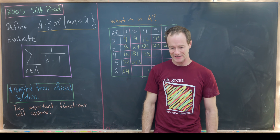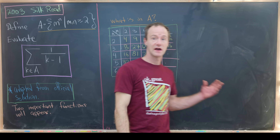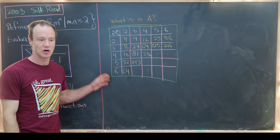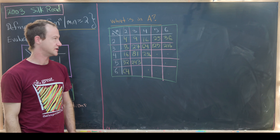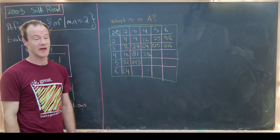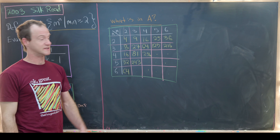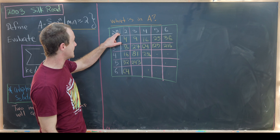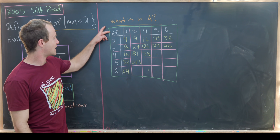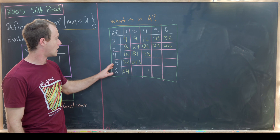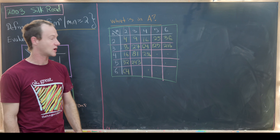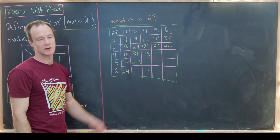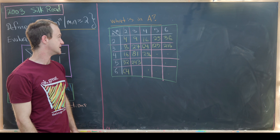To get an idea for what A looks like, I've cooked up the following chart. This is just a partial chart; you could fill in many more details if you wanted to explore the contents of A a little bit more deeply. I have my values of m running along the top row, and my values of n running along the leftmost column.